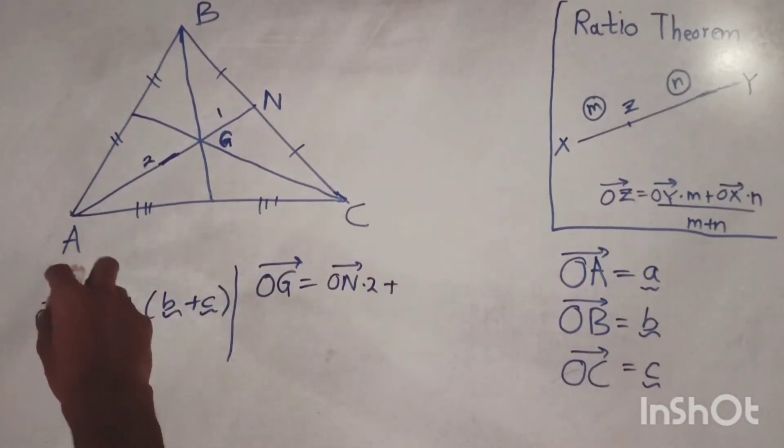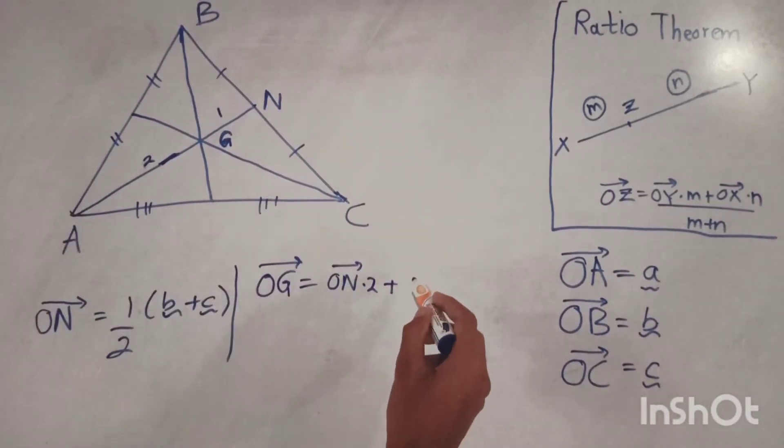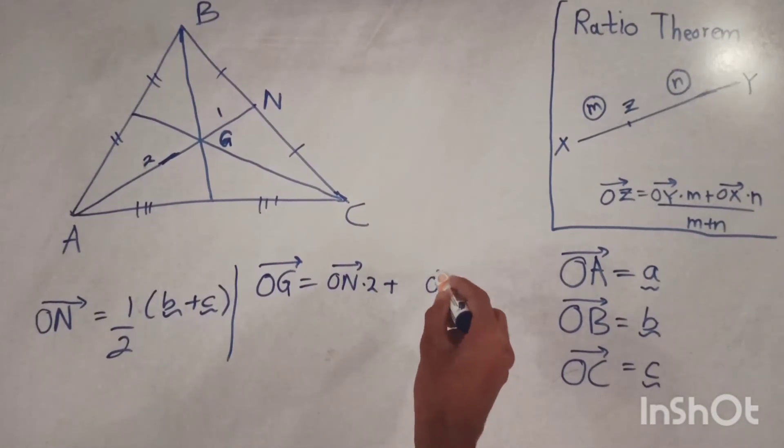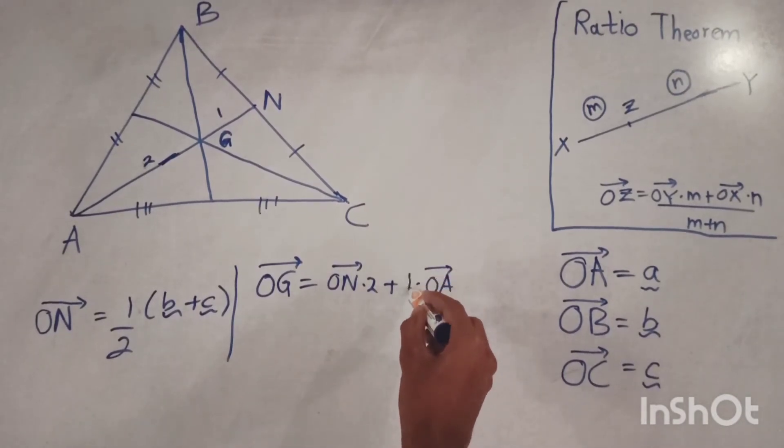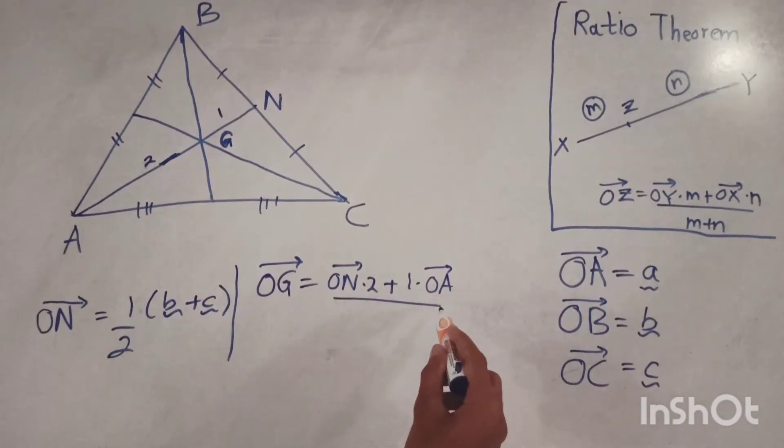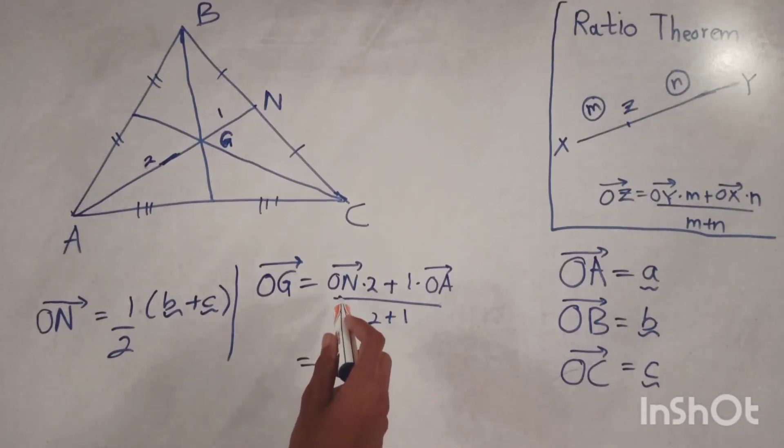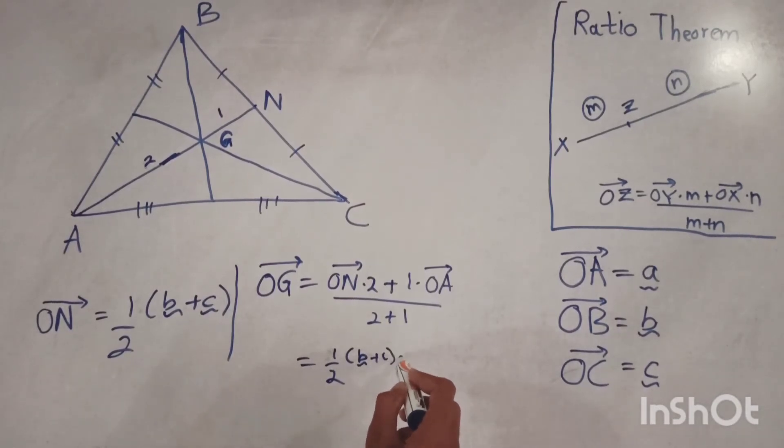Now we can simplify this. We can write ON as half times vector b plus c into 2, plus OA as simple a.